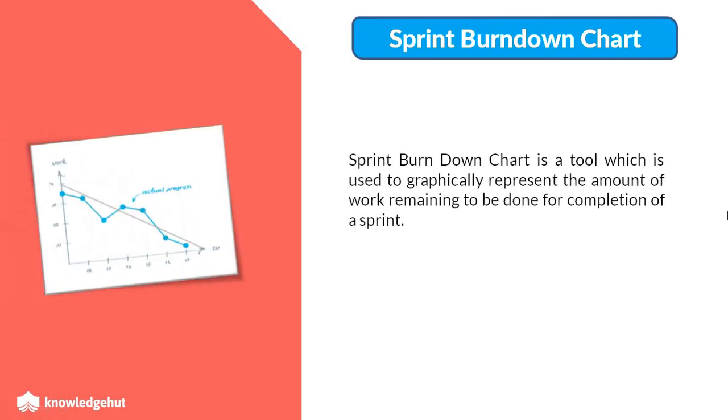What is a Sprint Burn Down Chart? The Sprint Burn Down Chart is a tool which is used to graphically represent the amount of work remaining to be done for the completion of a sprint.